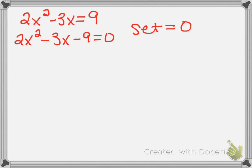Then it just depends on what method you're going to use to factor. The one I've been showing you consistently, because it's the less accident-prone method, is the grouping method. We figure out what A times C is and write down what B is. A times C would be 2 times negative 9, which is negative 18, and B is negative 3. We ask: what two numbers multiply to negative 18 and also add up to negative 3? The answer is negative 6 and positive 3.